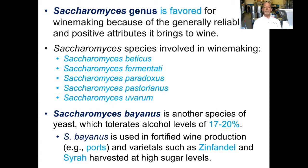Other Saccharomyces species besides cerevisiae that are involved in wine making include Saccharomyces beticus, Saccharomyces fermentati, Saccharomyces paradoxus, Saccharomyces pastoreanus, and Saccharomyces uverum. Saccharomyces bianus is another species that tolerates alcohol levels up to 17 to 20 percent. It's often used in fortified wine production such as ports, or certain varietal wines like Zinfandel and Syrah, which are harvested at high sugar concentrations producing high percentage alcohol wines.